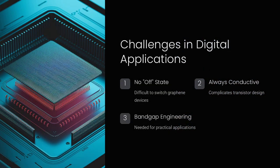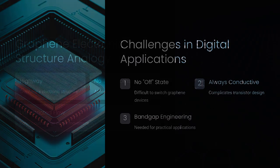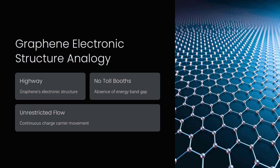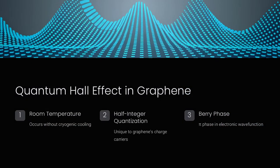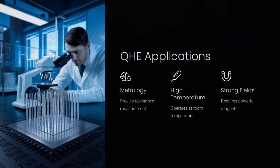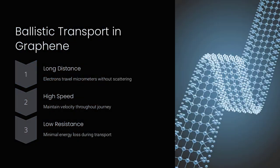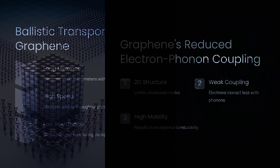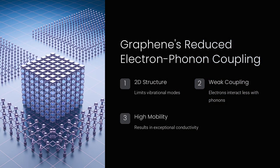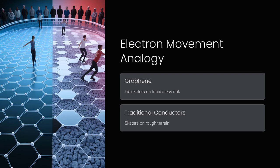Near-ballistic transport: electrons in graphene can travel micrometers without scattering, while in copper they scatter after just nanometers. This suggests an almost frictionless flow of charge, violating expectations from classical resistivity. Klein tunneling: normally, a potential barrier stops electrons, but in graphene electrons pass right through as if the barrier didn't exist — a phenomenon known as Klein tunneling, predicted in quantum field theory but never observed in ordinary solids.